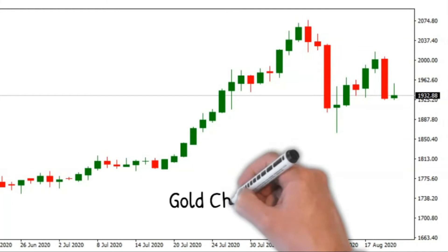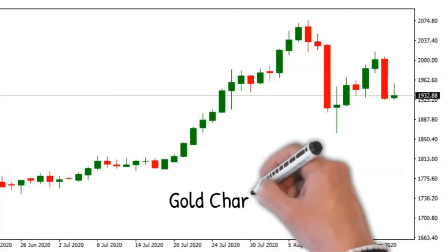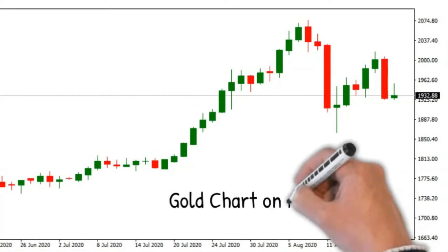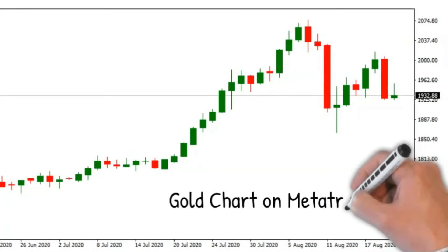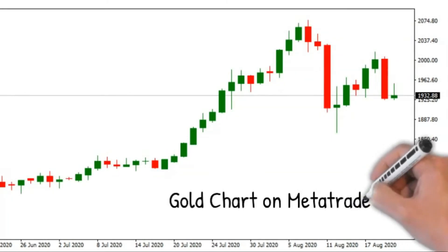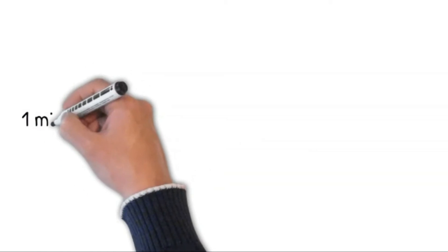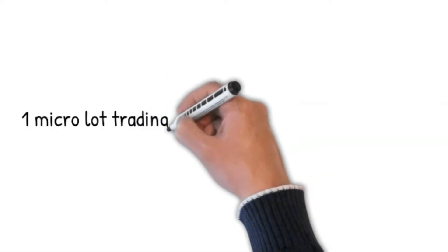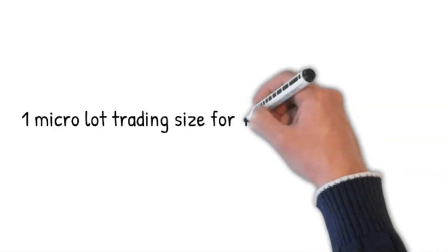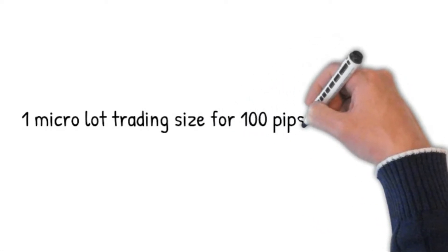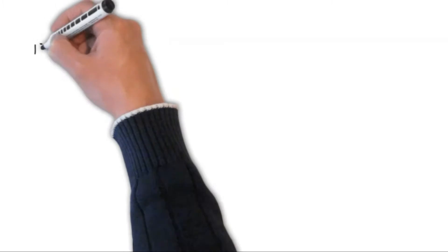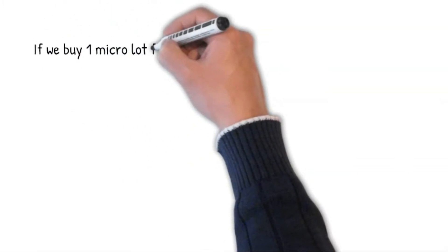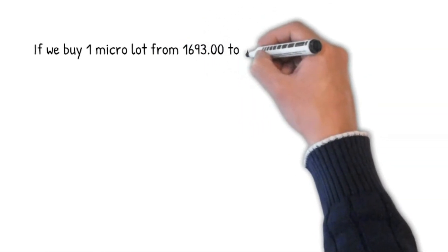A lot of people have a problem with this, but the answer is very simple. How to read pips on gold? I just want you to remember this simple way of thinking. If we trade gold on the MetaTrader platform, one micro lot trading size for a 100 pips target is $1. Just remember that: one micro lot trading size for 100 pips target is $1. It's easy to remember because if you buy one micro lot from 1,693 to 1,694, that is $1, or 100 pips.